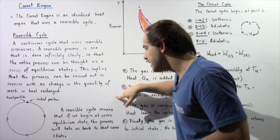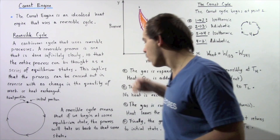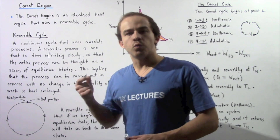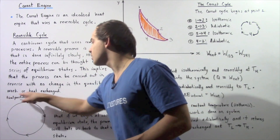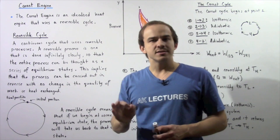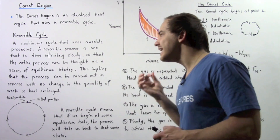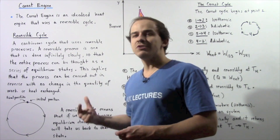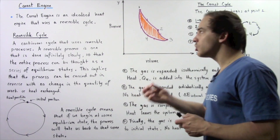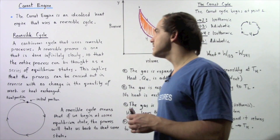A reversible cycle means that if we begin at some equilibrium state, the process will take us back to that same equilibrium state, and the amount of work required to go forward and in reverse is exactly the same. The reason a reversible cycle doesn't actually exist is that a reversible process must be done infinitely slowly, implying it requires infinite time — which is clearly impossible. So a Carnot engine doesn't exist in the same way that an ideal gas doesn't exist.